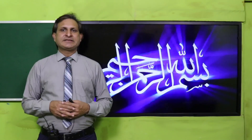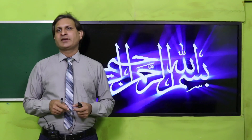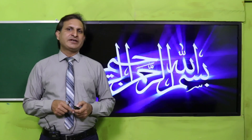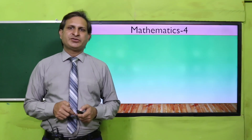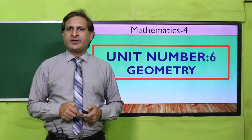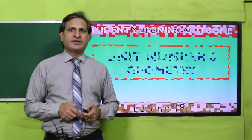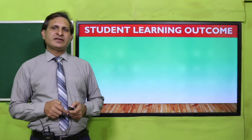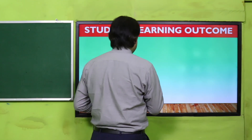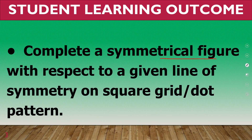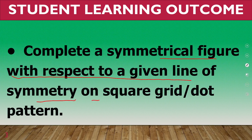Bismillahirrahmanirrahim. Respected teachers and dear students, Assalamualaikum. I am Vakas Ahmad. Today we will discuss Mathematics Grade 4, Unit number 6 about Geometry, Lesson number 18. In this lesson we will discuss the SLO: complete a symmetrical figure with respect to a given line of symmetry on a square grid or dotted pattern.